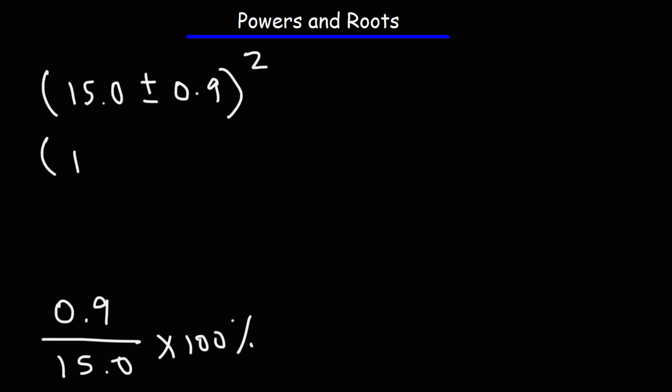So we can rewrite this as 15.0 plus or minus, let me get my calculator, 0.9 divided by 15 times a hundred. That will give us a percent uncertainty of six percent. Now let's apply this square. This square will be directed to the 15. So we're going to square the 15. Now for the percentage, it's going to affect it differently. We're not going to square the percentage. We're going to multiply these two numbers. So it's going to be 2 times 6 percent.